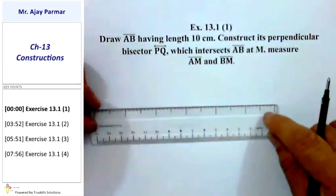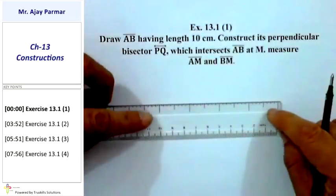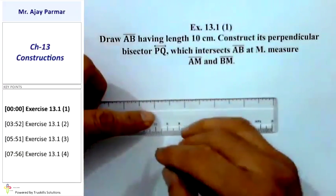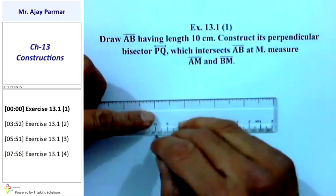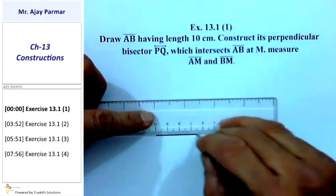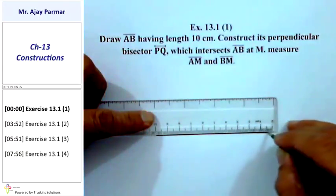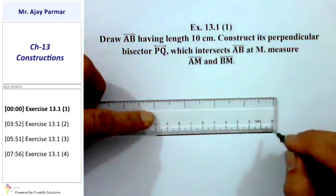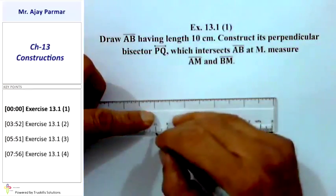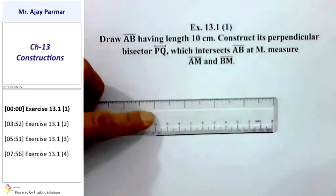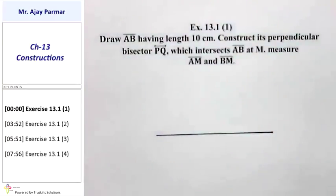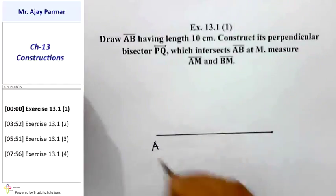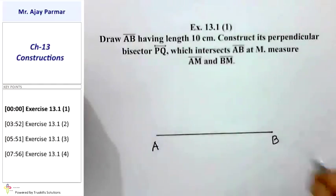First of all, we shall draw a line segment of 10 cm length. This is line segment AB of 10 cm. You are supposed to start with 0 and end with 10 — that is how you obtain the line segment. Let us call this line segment, according to the question, as line segment AB.